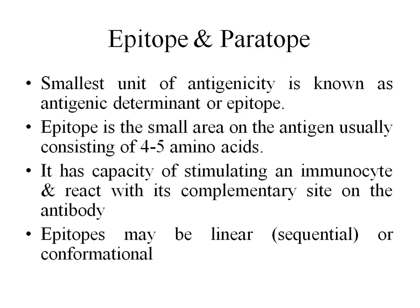Let's see two more terms: epitope and paratope. Epitope is the smallest unit of antigenicity on the antigen — it is the antigenic determinant of an antigen. This is the site where the antibody will come and bind, or the site against which antibodies are produced.